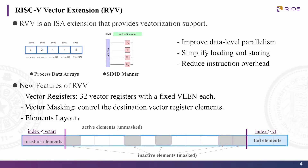RVV adds 32 vector registers and 7 unprivileged CSRs. Each vector register has a fixed VLEN bit of state. Looking at the layout, the two sides are pre-start and tail elements — they don't participate in instruction operation. The middle part elements have two types, active and inactive, controlled by RVV mask bits. This is a practical feature in array processing.